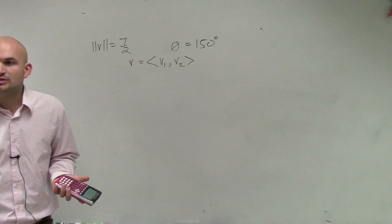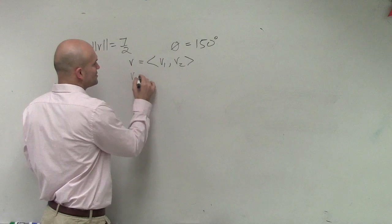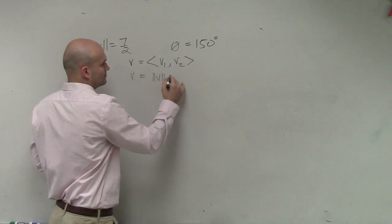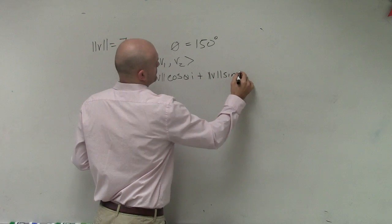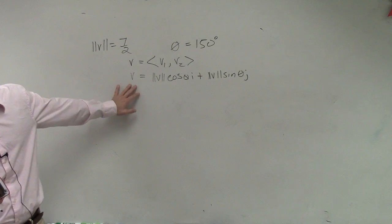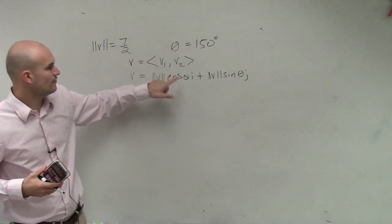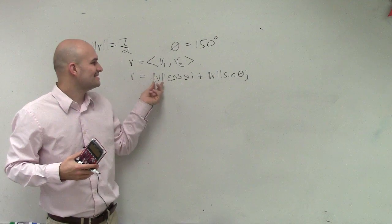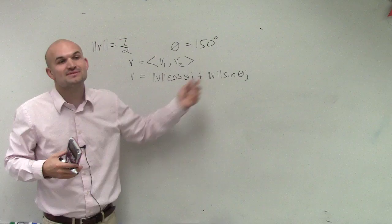But we also said when we talked about the direction of an angle and also a unit vector, we could rewrite v as the magnitude of v times cosine theta i plus the magnitude of v times sine theta j.